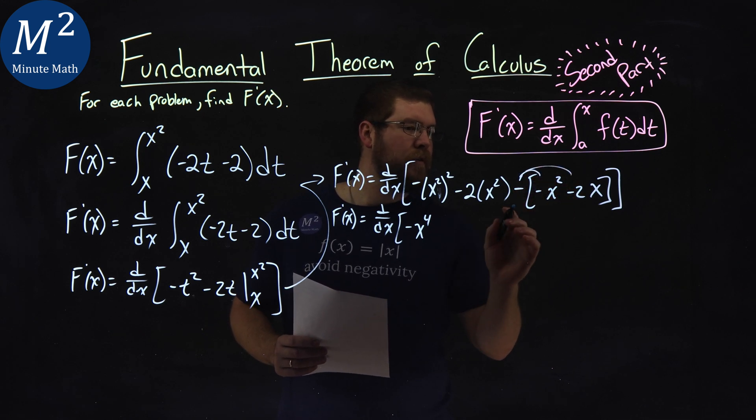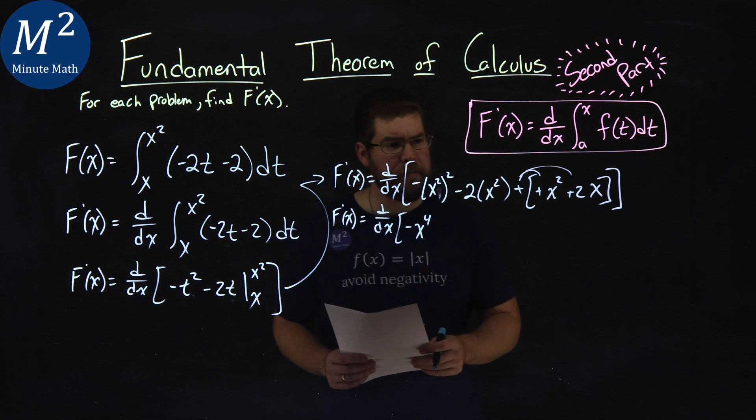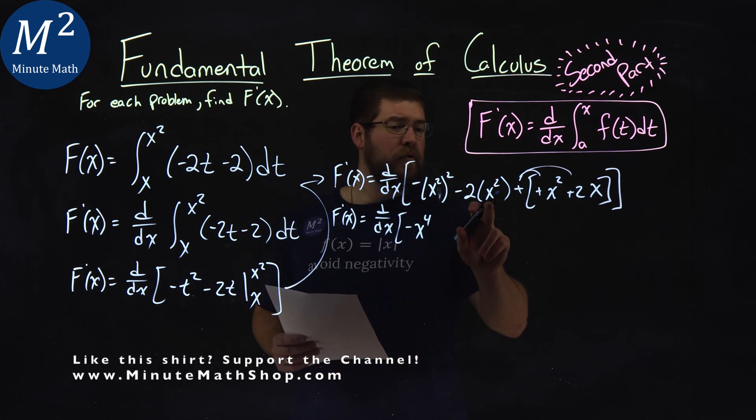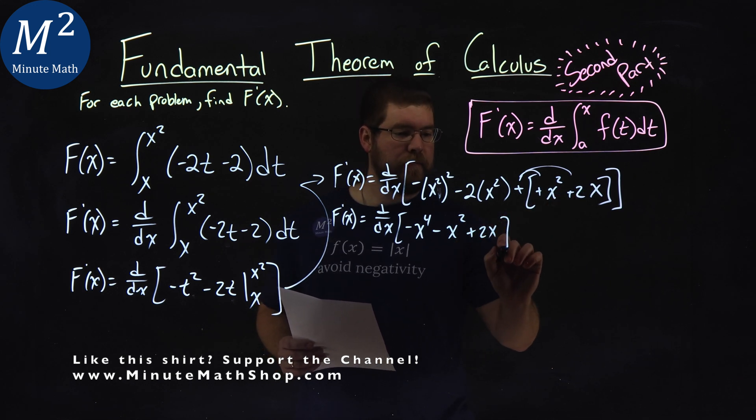distribute that across. So we have plus a positive. Negative 2x squared plus 1x squared is minus 1x squared. And then we just have a plus 2x at the end.